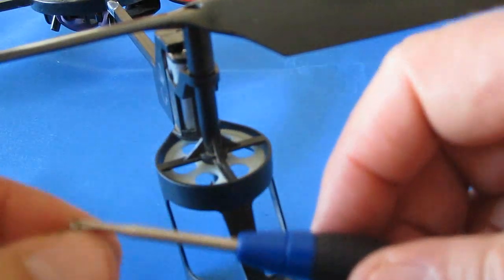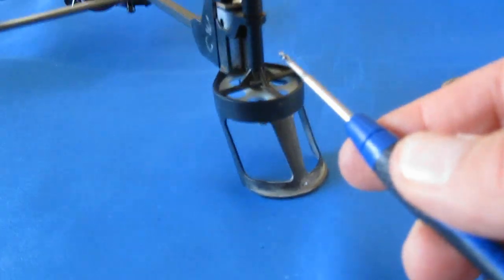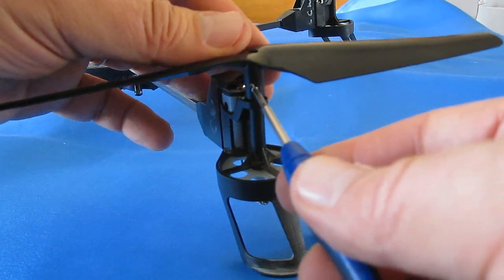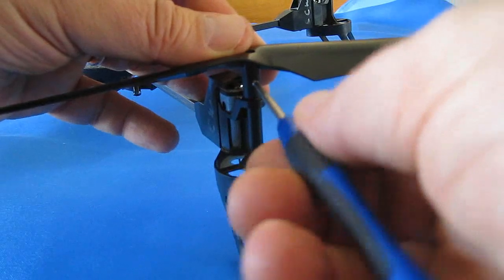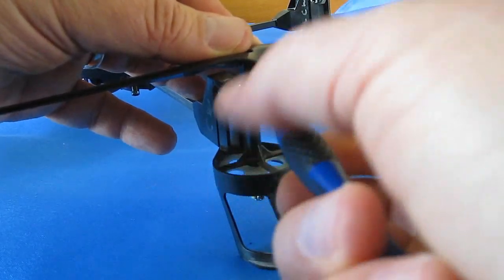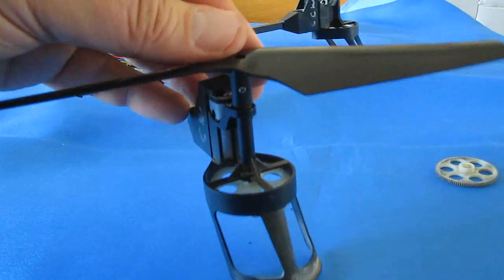Then we take our screw and reinsert it in that hole, and put the propeller back on. And that's it.